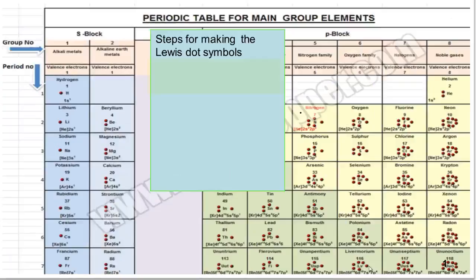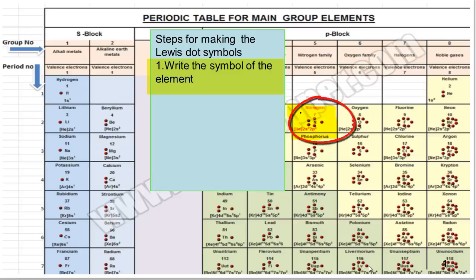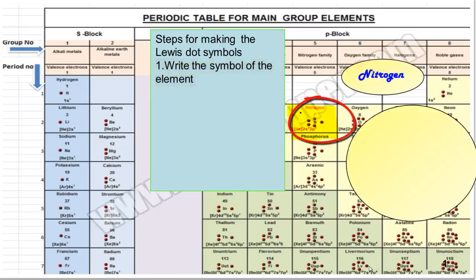The very first step for making a Lewis dot symbol is writing the symbol. Here I have taken the example of nitrogen. Nitrogen symbol is N.